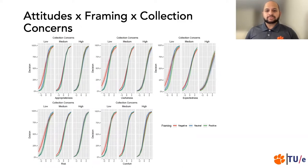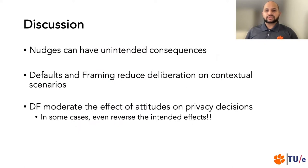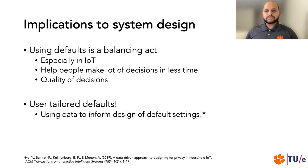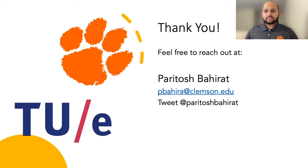You can find more details about these interesting results in our paper. Based on the results, we conclude that nudges can have unintended consequences. We show this using our results from interaction effects, where the effect of cognitive appraisals on decisions is reduced in presence of defaults, pointing to the possibility that defaults and framing reduce deliberation towards the context. As for future designs of smart home privacy systems, the use of defaults is in fact a balancing act: on one hand, we need people to make numerous decisions in really short time; on the other hand, we also need to ensure optimal decision quality. One potential solution is to use user-tailored defaults. We'll discuss these in another research paper, and we welcome you to take a look at it. Please feel free to reach out in case of any questions. Thank you so much for listening.